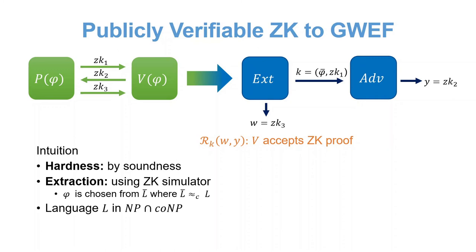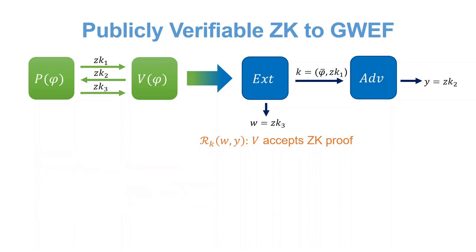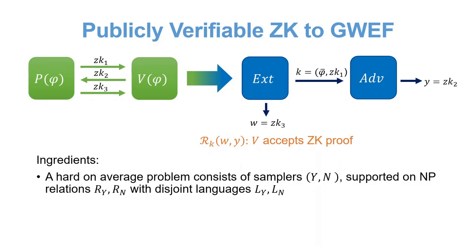We will now see the construction in a little more detail. So our ingredients were a hard on average problem, which consists of two samplers, one for yes instances and one for no instances, supported on NP relations with disjoint languages. This is equivalent to non-interactive commitment schemes, but it is conceptually clearer for our purposes. Second, we have a publicly verifiable three-message zero-knowledge for the yes instances of the language.